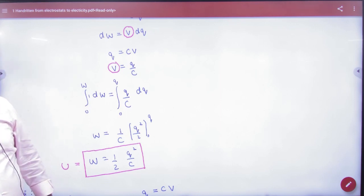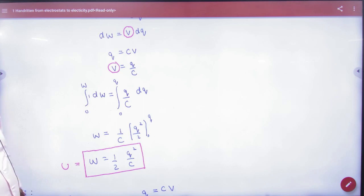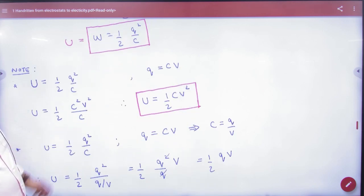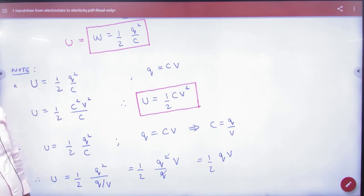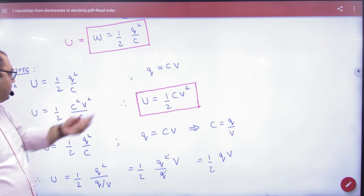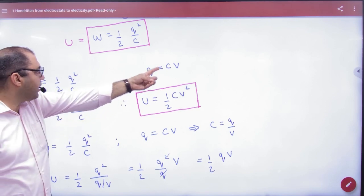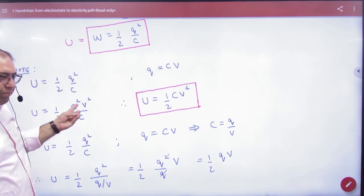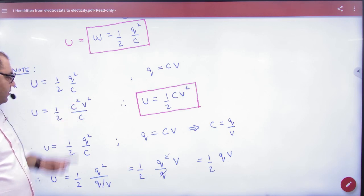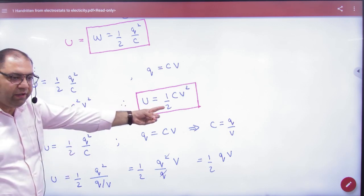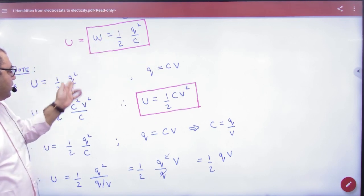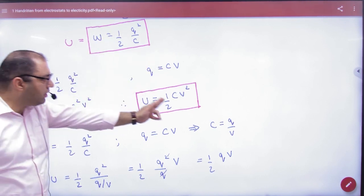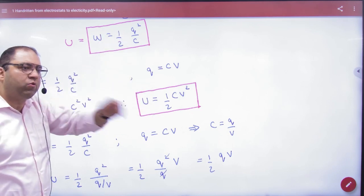Both methods give the same result: ½Q²/C. Now, since Q = CV, we can substitute into the formula. Replacing Q with CV: ½(CV)²/C = ½CV². So we get a second formula: ½CV². These two formulas are equivalent — there is no difference between them.